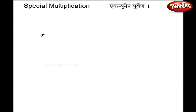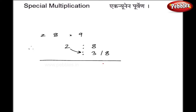Let us take one more example to make it clearer: 28 multiplied by 9. I split it as 2 and 8. Then I add 1 to the left hand side: 2 plus 1 is 3, and 8 stays as it is. Now 8 is subtracted from 10, giving 2 on the right hand side, and 8 minus 3 is 5, and 2 stays, so I get my answer 252.